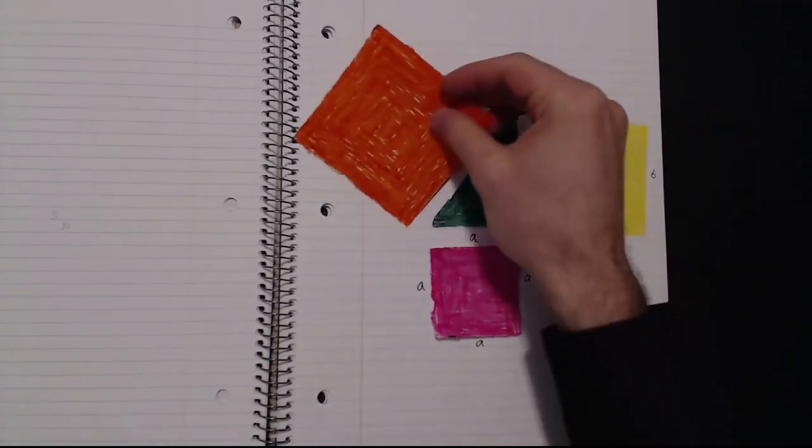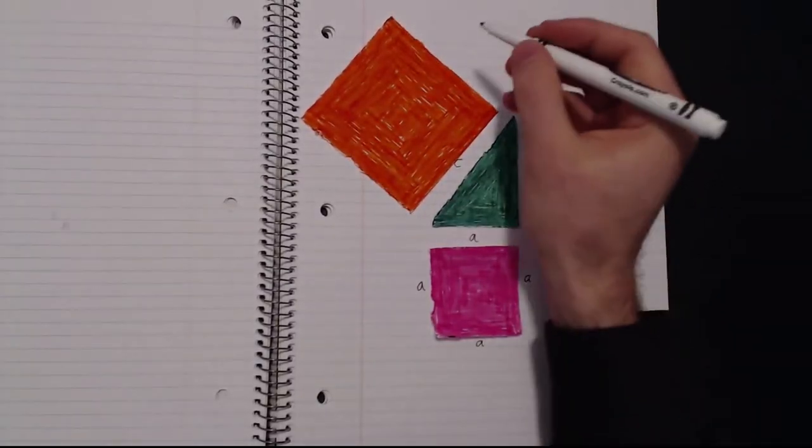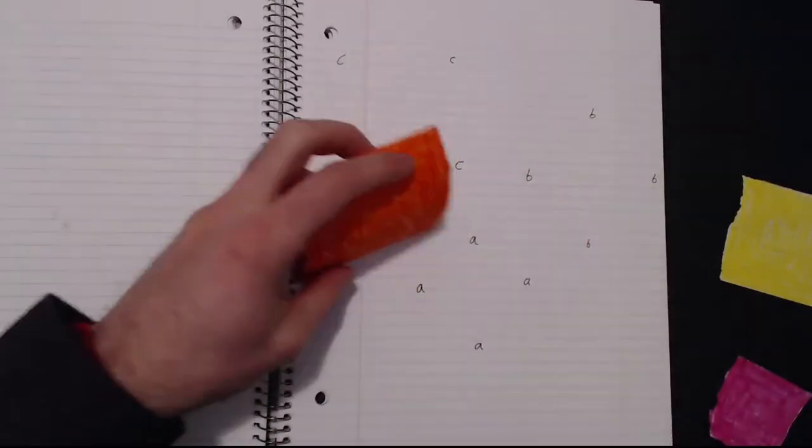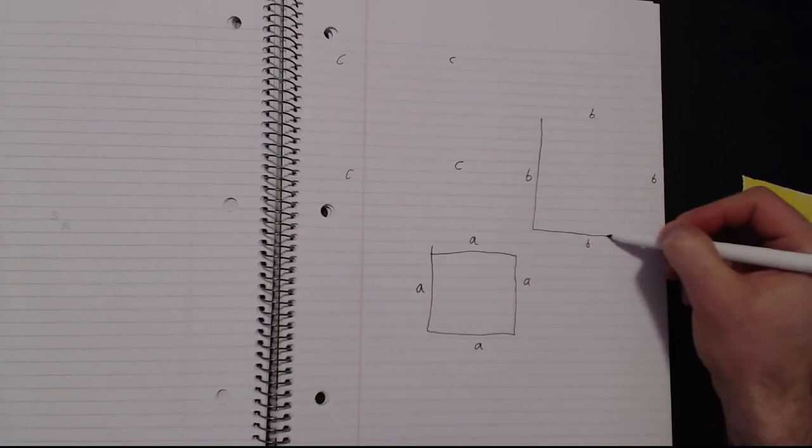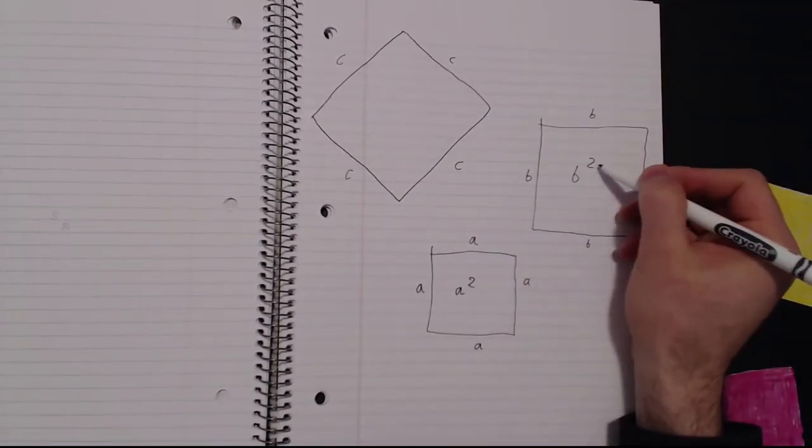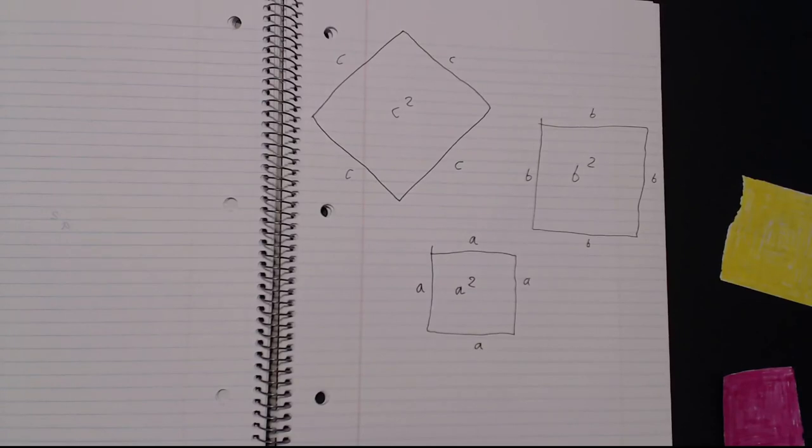We know the area of those squares, a squared, b squared, and c squared. We know that the small square plus the next small square is equal to the large square. And we know that the area of a squared plus b squared is equal to c squared.